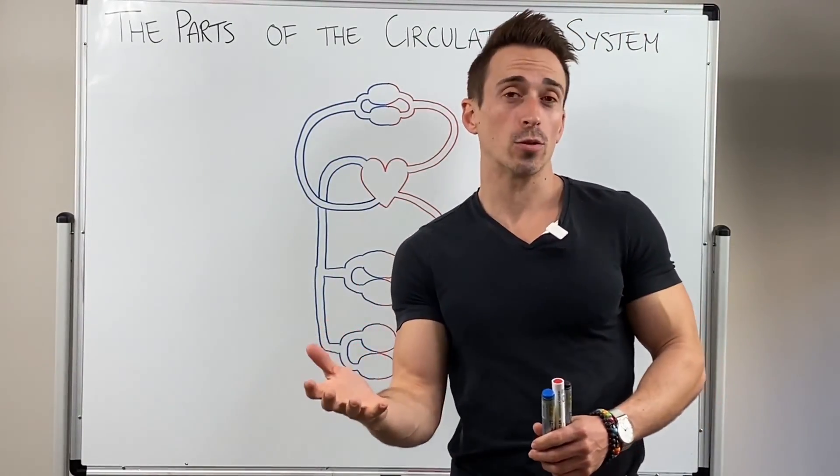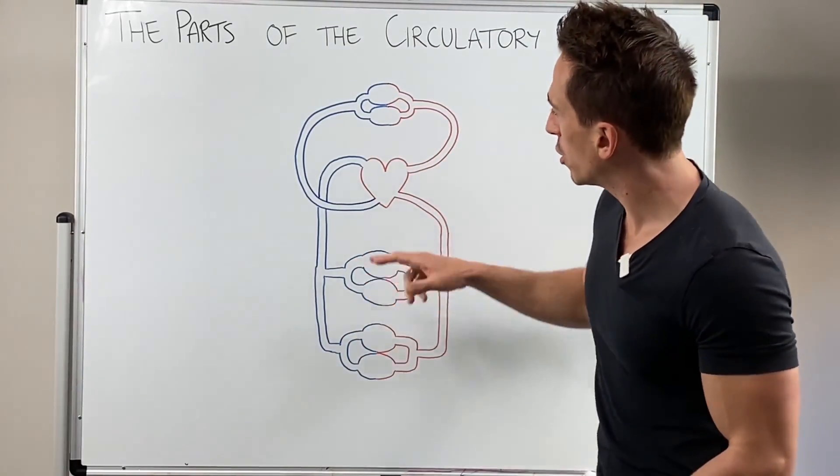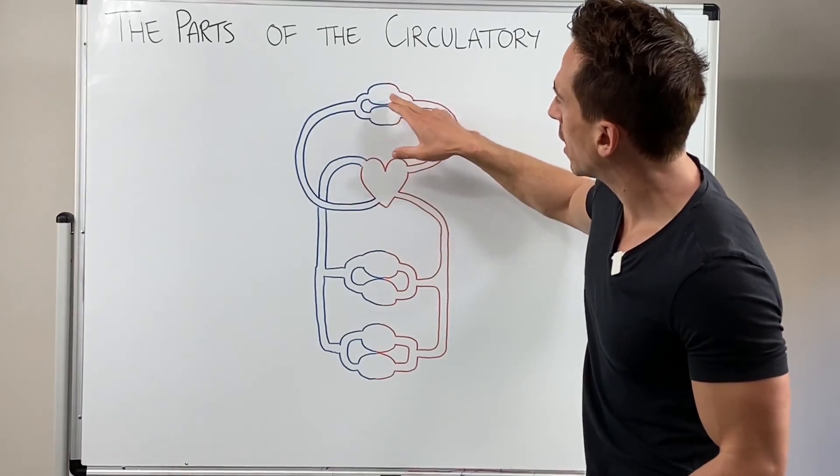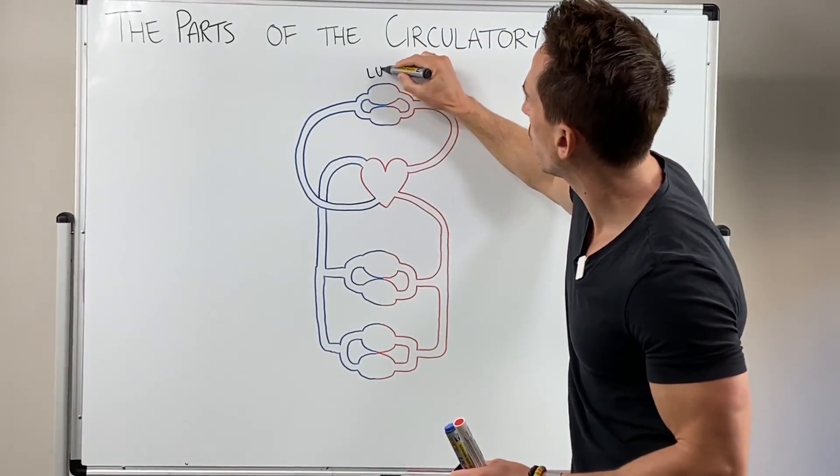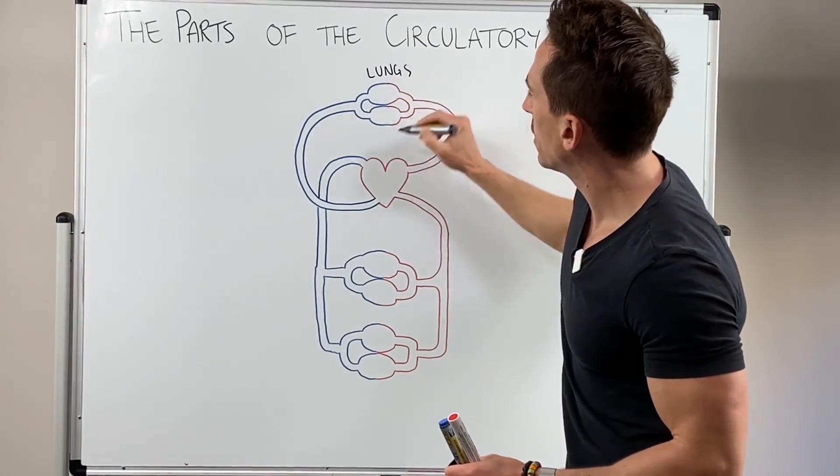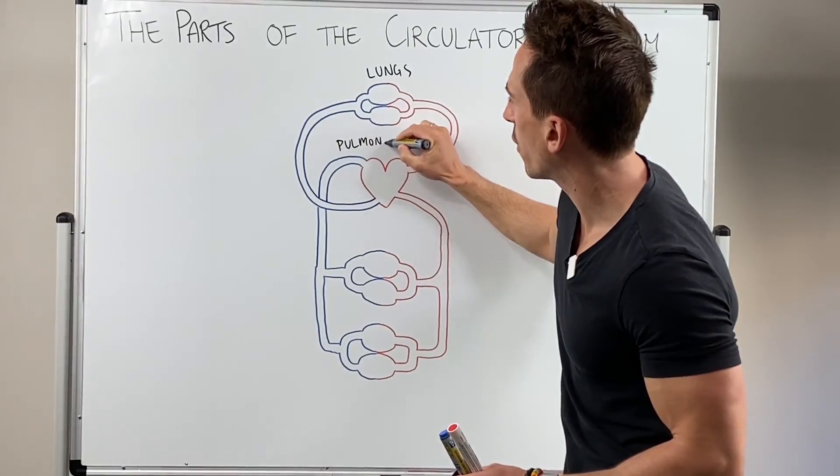So the first thing we need to talk about is the fact that there's actually two different types of circulation. There's the circulation that goes from the heart to the lungs and back to the heart. So let's just write lungs here, just so we're aware. And this is called the pulmonary circulation. So pulmonary is referring to lungs.